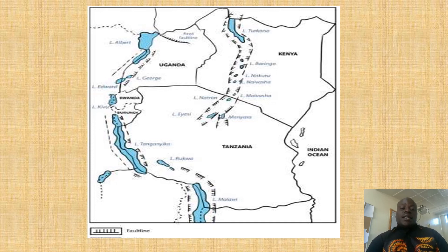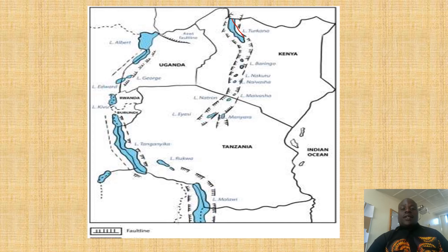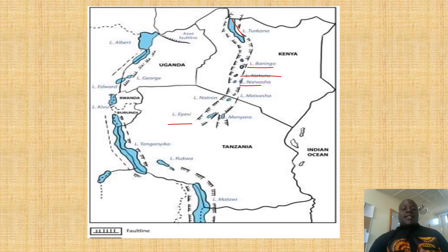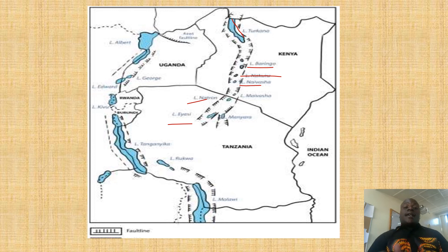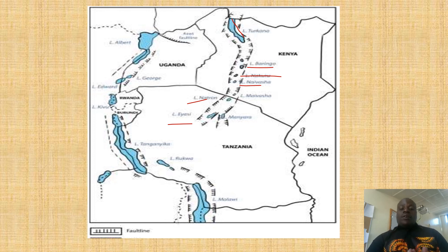You will check for lakes like Turkana in Kenya, Baringo, Nakuru, Naivasha, Ais, Natron, Tanganyika, Malawi, Edward, and Albert. Remember you have to identify lakes in the eastern arm and lakes in the western arm.